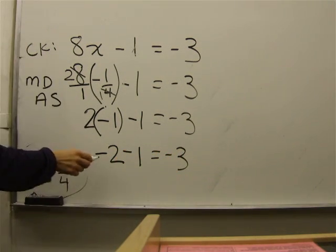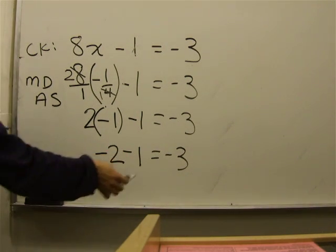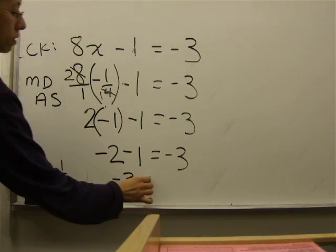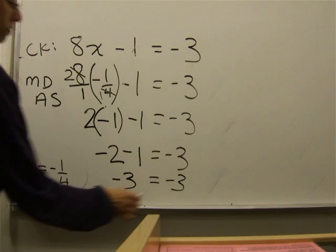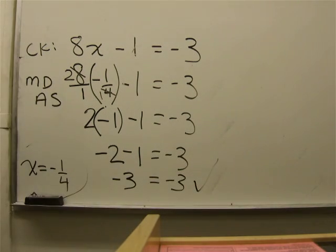Now, negative 2 and negative 1. It's as if you lost money. You lost 2 dollars and you lost 1 dollar. You lost 3 dollars. Bring everything else down. Negative 3 equals negative 3. Check.